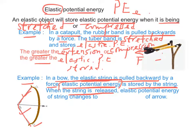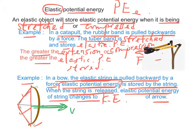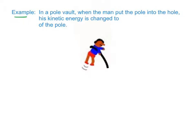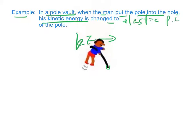When the string is released, the elastic potential energy of the string changes to kinetic energy of the arrow. Another example: in pole vaulting, when the man puts the pole into the ground, his kinetic energy changes to elastic potential energy of the pole when the pole is bent.